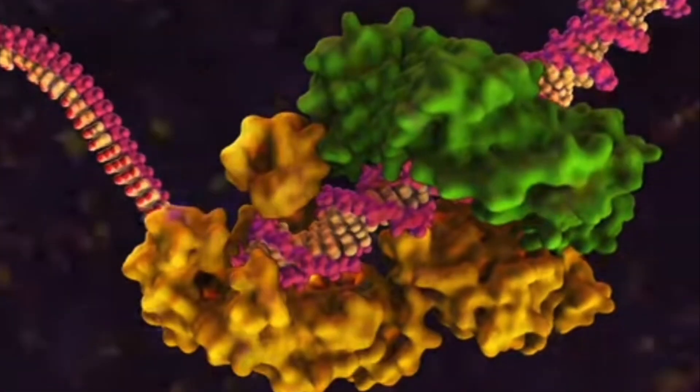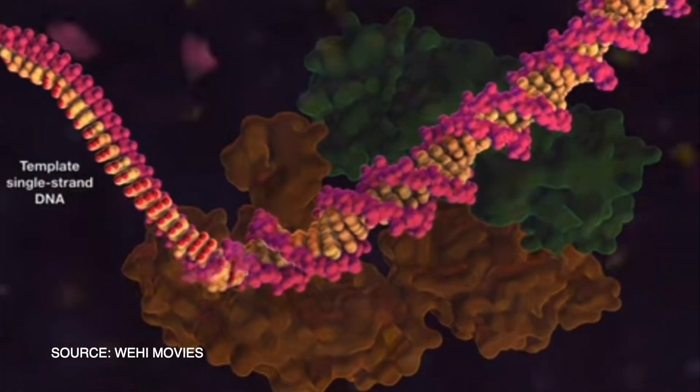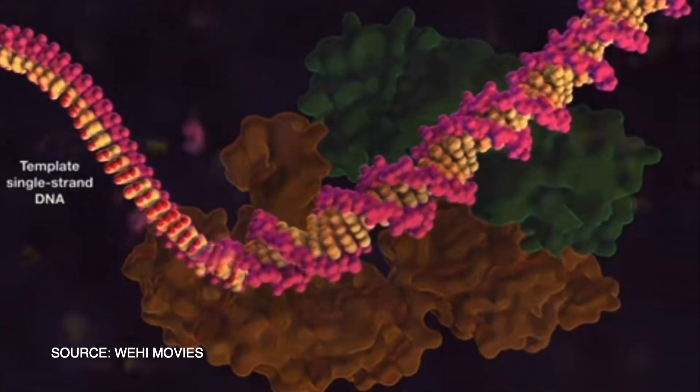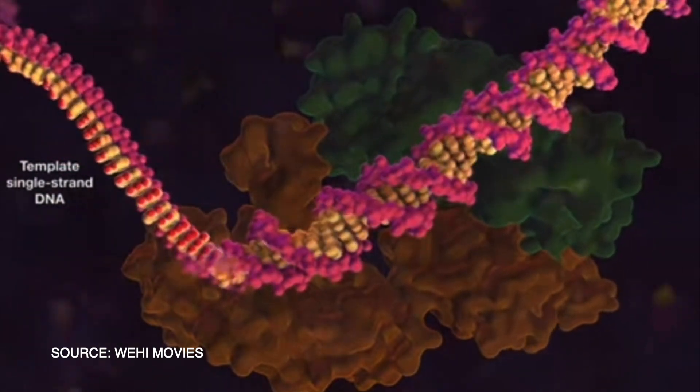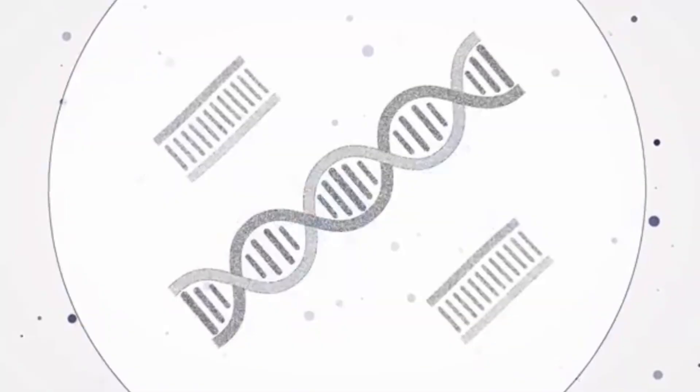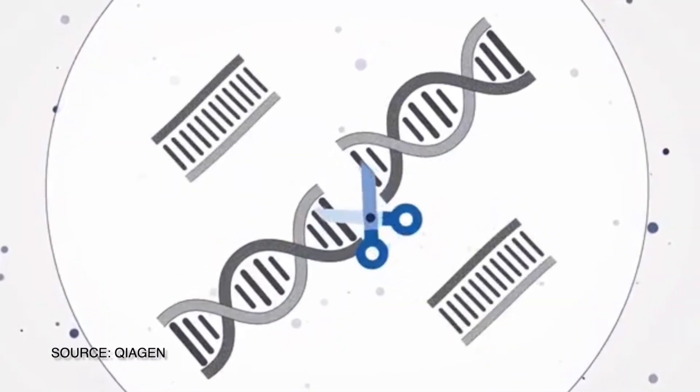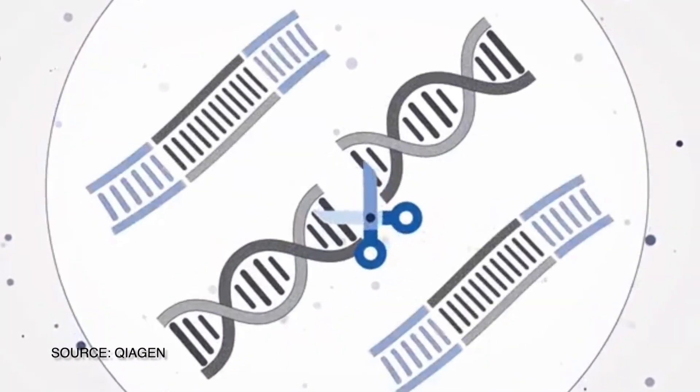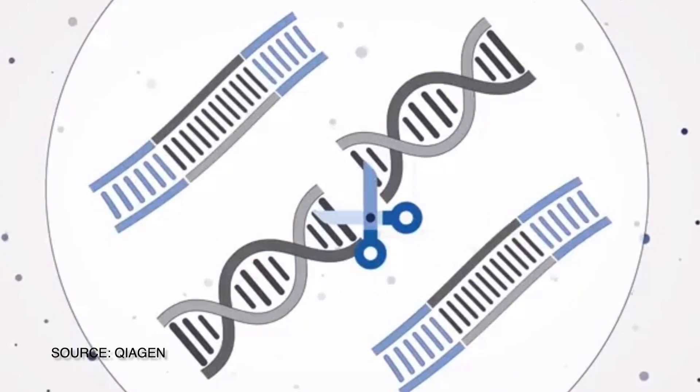DNA polymerases can only add nucleotides to a certain number of bases before it starts making mistakes and creating mismatches. Consequently, the input DNA must be fragmented into tiny DNA pieces before sequencing can begin.